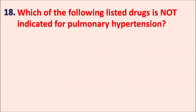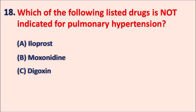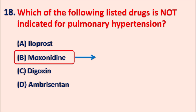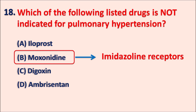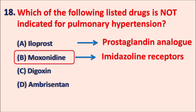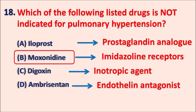Question eighteen: Which of the following drugs is not indicated for pulmonary hypertension? A: iloprost, B: moxonidine, C: digoxin, D: ambrisentan. The right answer is B: moxonidine. Moxonidine is a centrally acting antihypertensive acting on imidazoline receptors coupled with alpha-1 receptors, used as an antihypertensive when others are not working, but it is not used for pulmonary hypertension. Iloprost is a prostaglandin analog used for pulmonary hypertension. Digoxin is an inotropic agent that increases cardiac output in pulmonary hypertension. Ambrisentan is an endothelin receptor antagonist used in pulmonary hypertension.